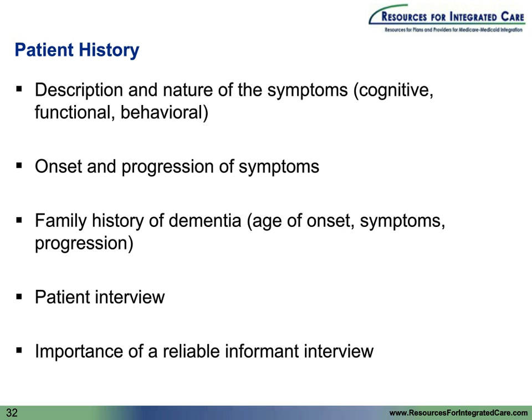It's also helpful to find out if there's a family history of dementia — ask about age of onset, type of symptoms, and progression. Interview the patient to get an idea of their perception of the symptoms. In many instances, their perceptions won't match what the informant tells you, but it gives insight into their own judgment regarding their deficits. And lastly, it's very important to have a reliable informant and engage that person as part of the interview. If at all possible, have this informant interview be private, because family members or professional caregivers may not feel comfortable giving you all the detail you need in front of the patient.